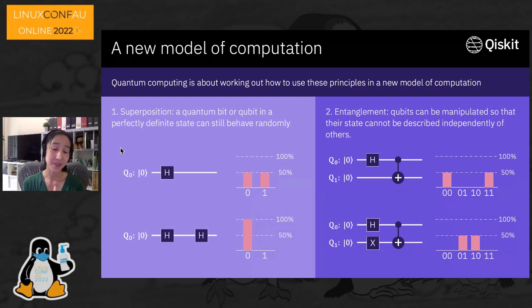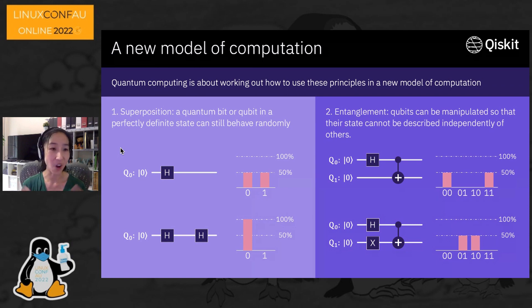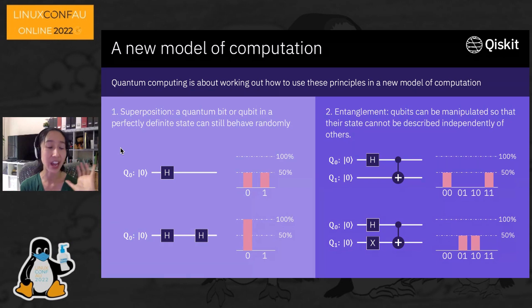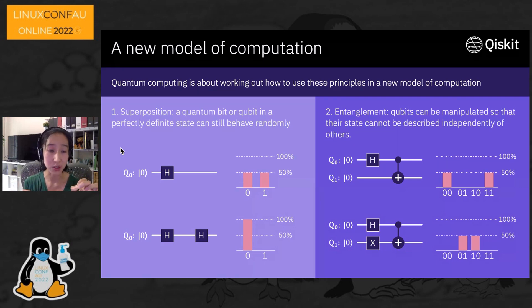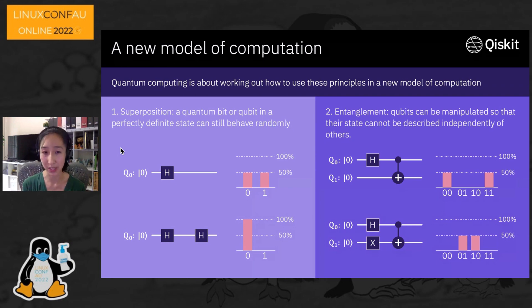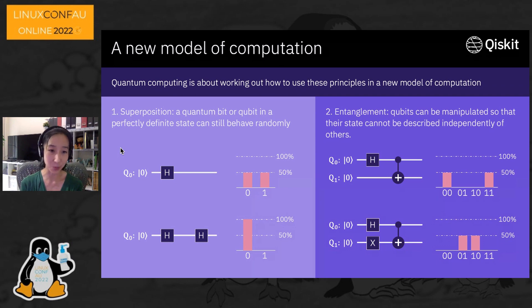The other principle quite different from classical computing is quantum entanglement — qubits can be manipulated such that their state cannot be described independently of others. For example, with two qubits Q0 and Q1, you can put them in a state where if you measure qubit zero, you know qubit one will be in the same state: if Q0 is zero, Q1 is zero; if Q0 is one, Q1 is one. Alternatively, there are entanglement states where if one qubit is zero, you know the other is one.